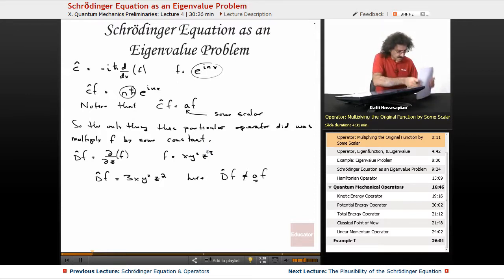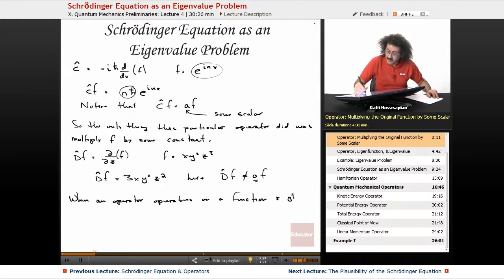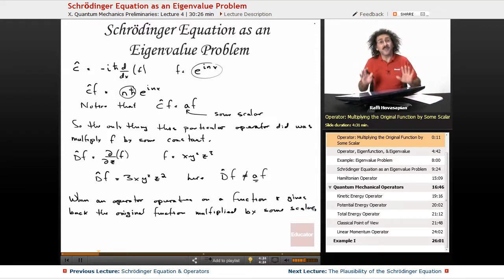When an operator operates on a function and gives back the original function multiplied by some scalar, this is profoundly important.